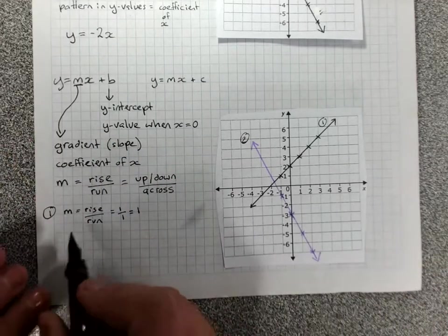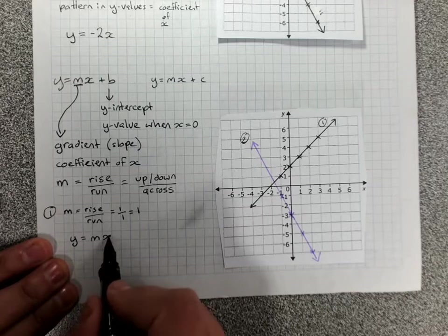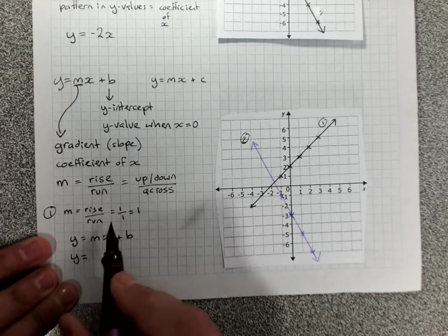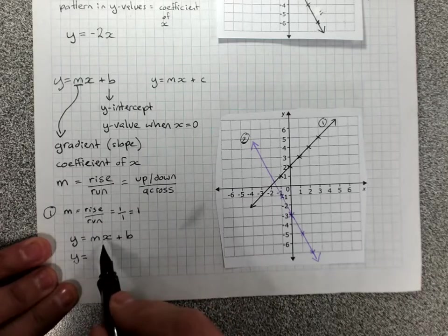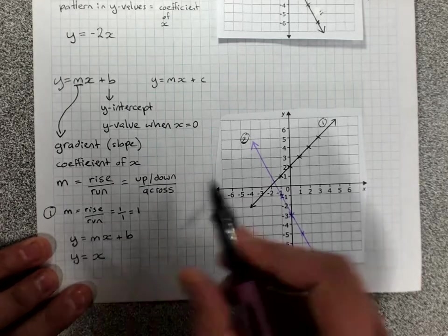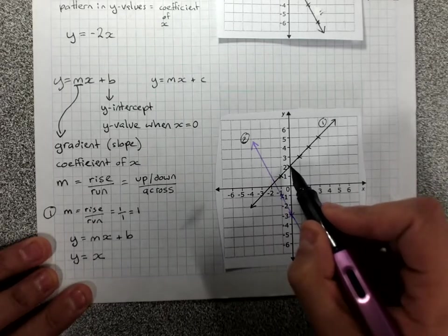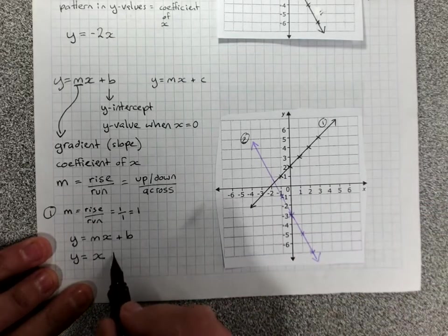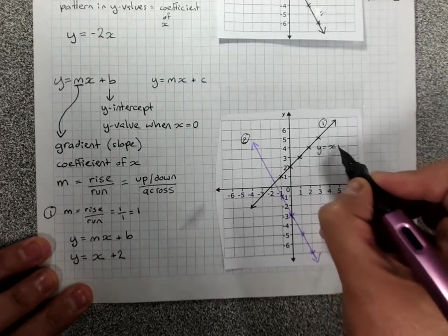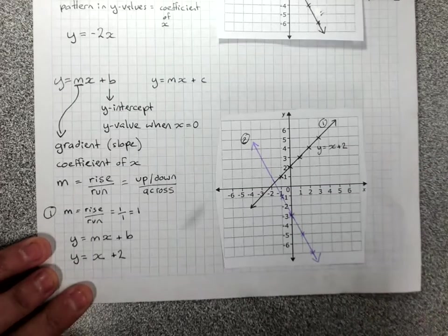Then we just need to take the rule, y equals mx plus b. That will be y equals 1x, so I don't need to write the 1, x. Then I go back to the line, I get the y-intercept, positive 2, plus 2. This line is y equals x plus 2. We didn't need to make a table of values.